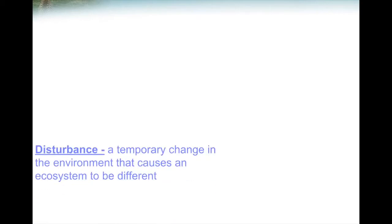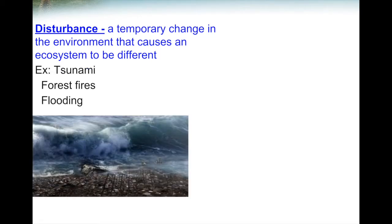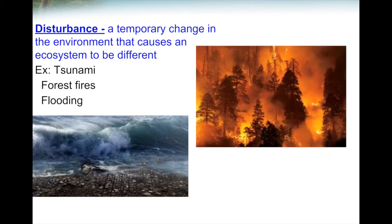Today we're taking a look at what happens after an area has been messed up because of a natural disaster or something that humans do to change the environment. A disturbance is any type of temporary change in the environment that causes it to be a little bit different — like a natural disaster or human activity. These are all examples of disturbances because they change what the environment might look like.